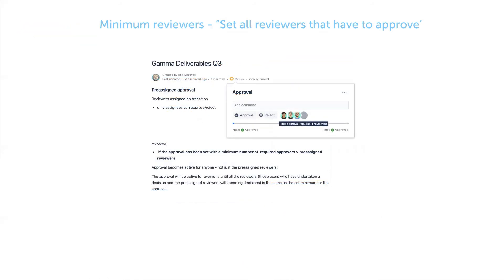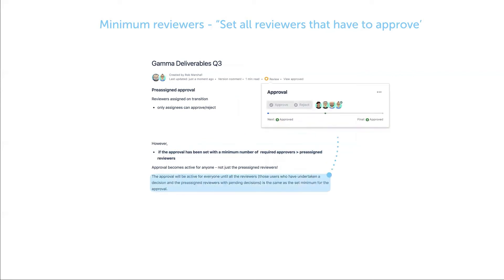Looking at the approval: if the approval has been set with a minimum number of reviewers which is less than the pre-assigned reviewers, the Approve and Reject buttons are active for anyone else. Once the number of pre-assigned reviewers with pending decisions, plus those users who have undertaken the decision, equals the minimum, the Approve and Reject buttons are disabled for all other users.